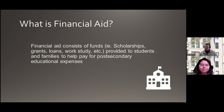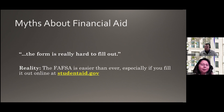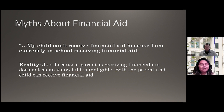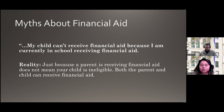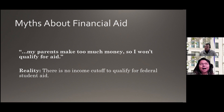Here at financial aid, we want to burst some myths. Myth: the form is really hard to fill out. Reality: the FAFSA application is easier than ever to submit, especially if you fill it out online at studentaid.gov, and we encourage everyone to submit a FAFSA. Another myth: my child can't receive financial aid because I'm also in school and currently receiving financial aid. The reality is just because a parent is receiving financial aid does not make your student ineligible. Both parents and children can receive financial aid in the same academic year as long as they are both eligible.